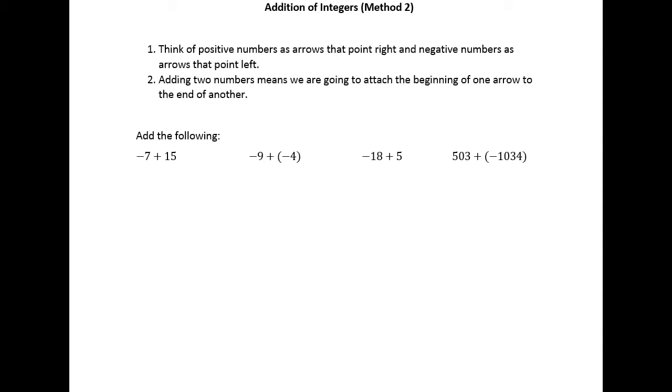Method two goes like this: we're going to think of positive numbers as arrows that point to the right and negative numbers as arrows that point to the left, and we're going to look at these in the context of a number line.